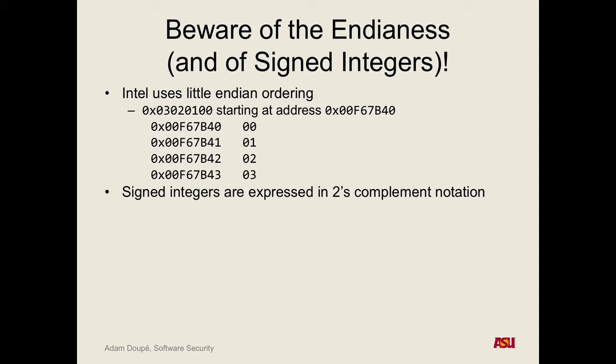Another thing is signed integers — if you put negative one into the program, how is that going to be represented? All ones (all 1s in binary). We're only able to look at what bits are in the registers and what bits are in memory. The interpretation of what those bits means depends on you: is this an unsigned number (a really large number) or a signed number (a negative number)?